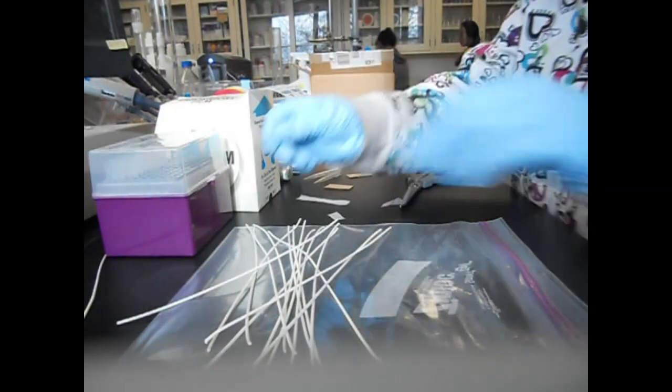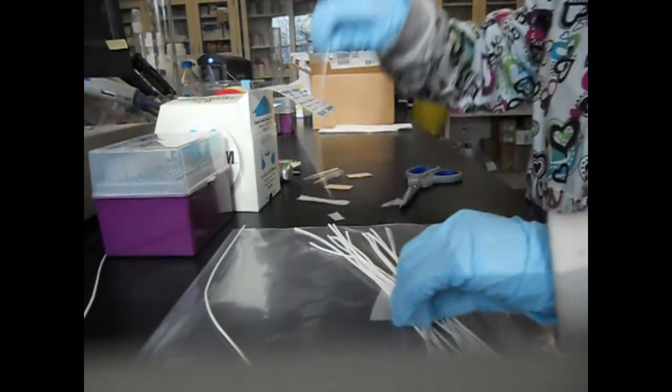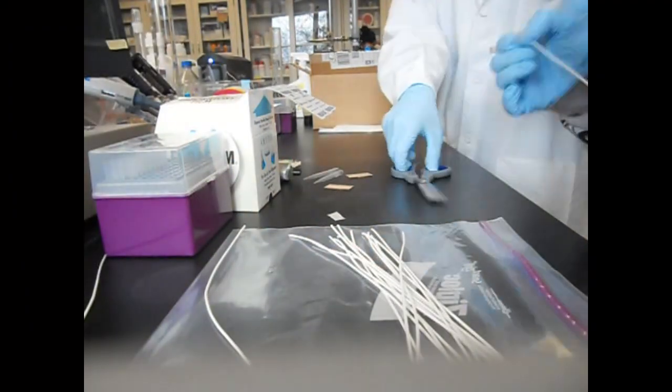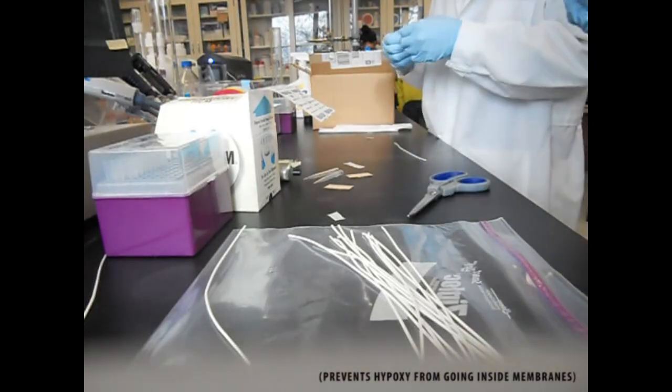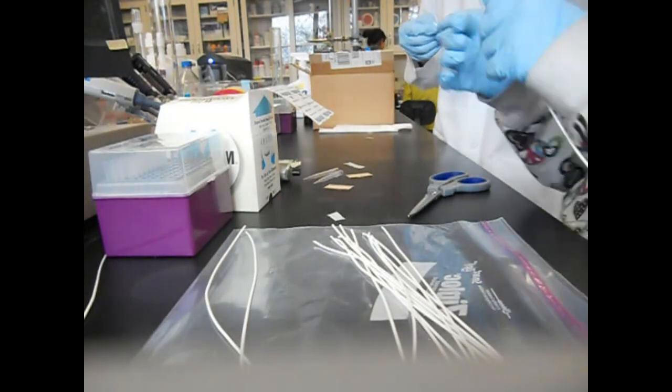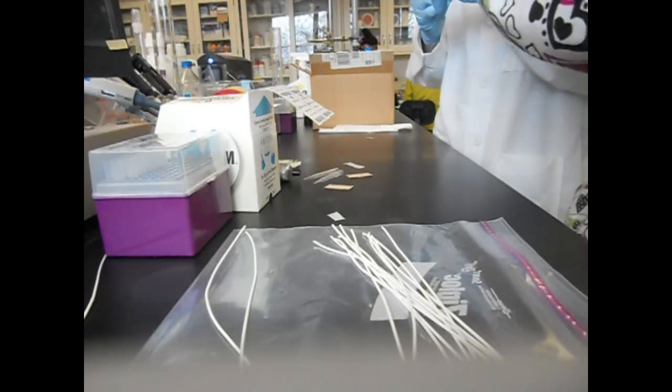Then do the same thing on the rest. It will prevent the epoxy from going inside the membranes when you glue it. Otherwise, it will block the hollow inside.